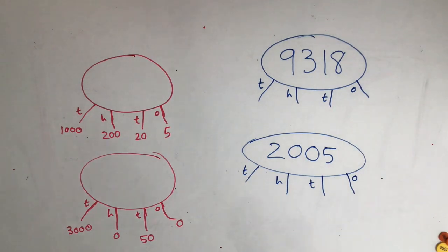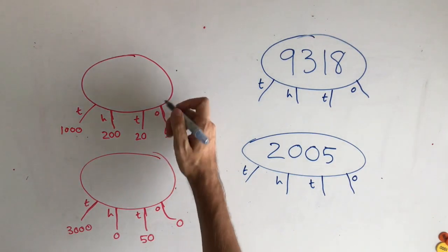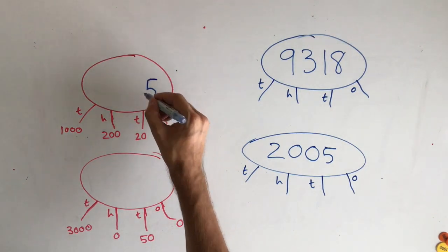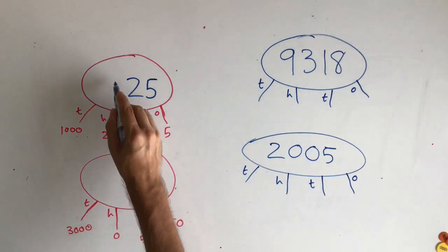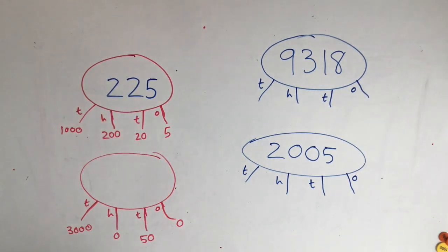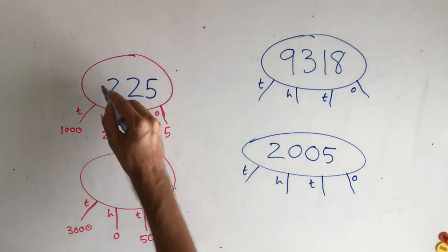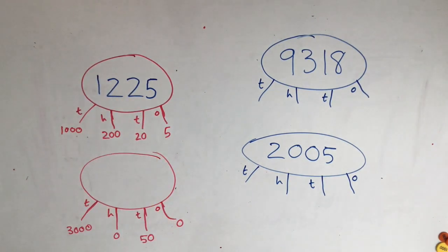Let's have a go. I can see here that the value here is 5 so the 1 must be 5. The value here is 20 so it will be 2. The value here is 200 so I add another 2 and the value here is 1,000 so it will be 1. The 4 digits in my number match the values so that's right.